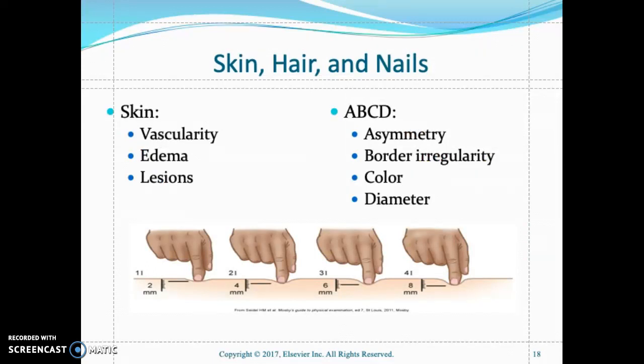When assessing skin lesions, look for asymmetry, borders, color, and diameter. Also assess for pitting edema on a scale of plus one to plus four. For asymmetry, one half of the lesion does not match the other. For borders, look for ragged or irregular edges.